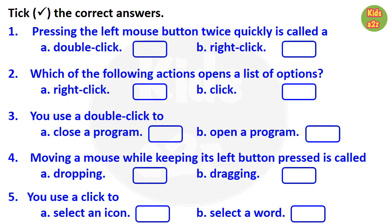First one: pressing the left mouse button twice quickly is called a — answer is double click. Number two: which of the following actions opens a list of options? Answer is option A, right click.